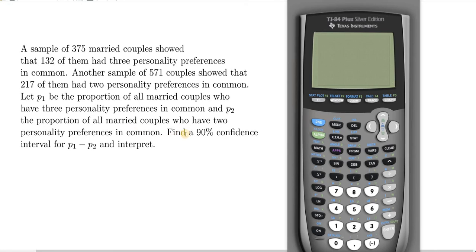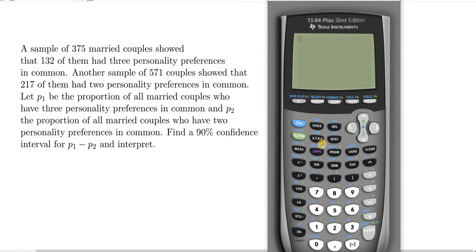If we skip to the last sentence here, it says find a 90% confidence interval for P1 minus P2. So that's a confidence interval for two proportions. First, let's go into the calculator and I'll show you where to go.